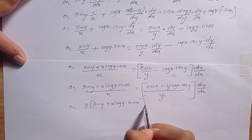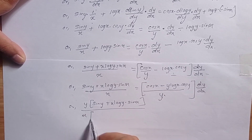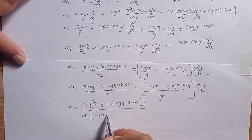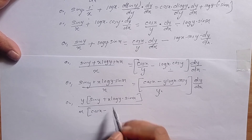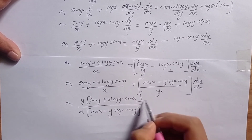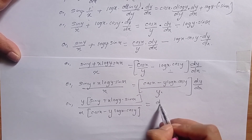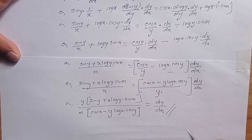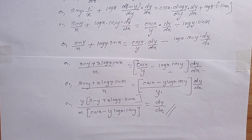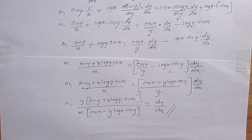So the final answer for dy/dx is: y times (sin y plus x log y times sin x) divided by x times (cos x minus y log x times cos y). Thank you for watching this video. Please give feedback and like the video. See you in the next video — this is Bikram.